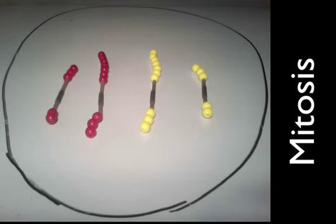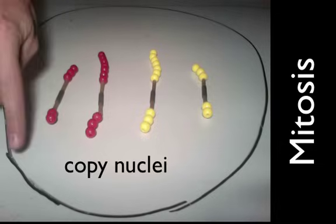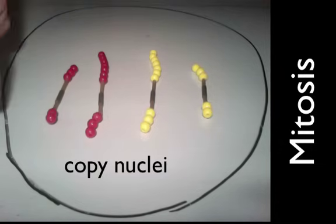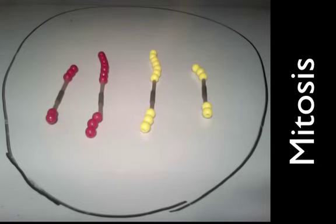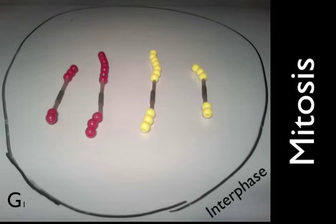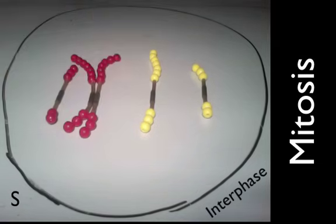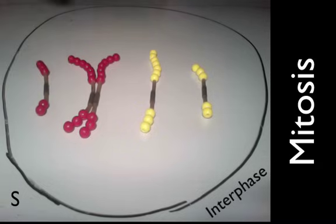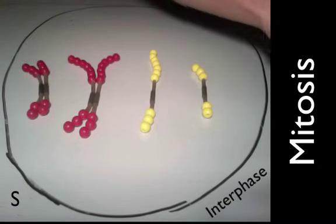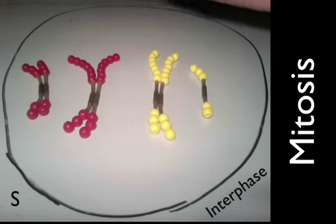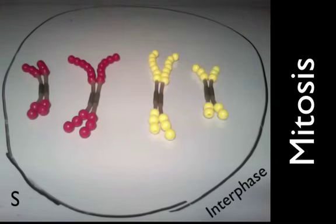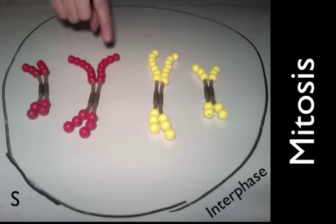So what's our goal in mitosis? The goal is to make an exact copy of the nucleus. Before a cell divides, it will get bigger and then copy its DNA. When it copies the DNA, this chromosome will have an exact copy made — this occurs during the S phase. Each chromosome will have an exact copy of itself made.